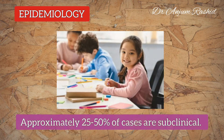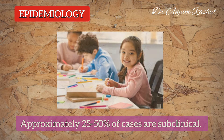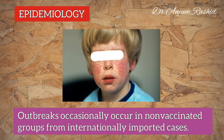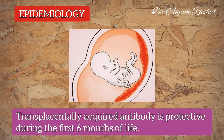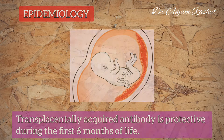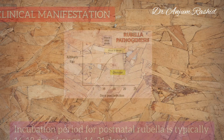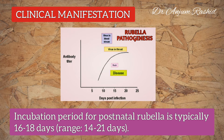In unvaccinated populations, rubella usually occurs in the spring season and epidemics occur in cycles every six to nine years. Approximately 25 to 50 percent of cases are subclinical. Outbreaks occasionally occur in non-vaccinated groups from internationally imported cases. A transplacentally acquired antibody is protective during the first six months of life.